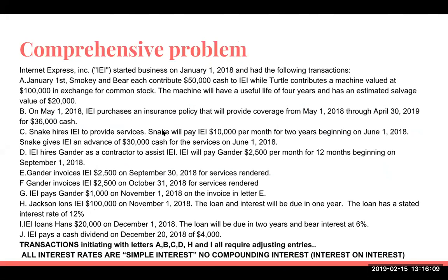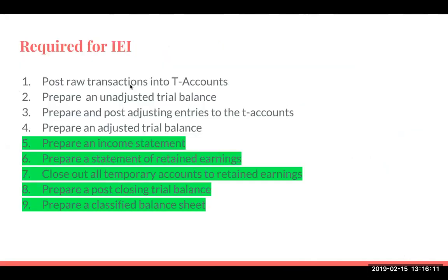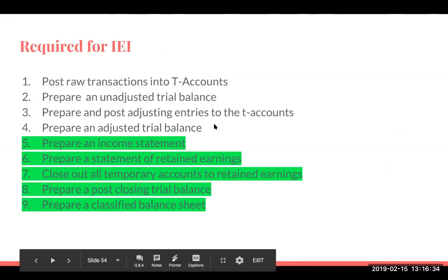We're looking at this comprehensive problem and now we're at the last part. In the earlier video we posted the raw transactions and the T-accounts. We need an unadjusted trial balance. We did the adjusting journal entries, we prepared the adjusted trial balance, and now we're going to do the income statement, statement of retained earnings, closing out temporary accounts to retained earnings, preparing the post-closing trial balance, and lastly a classified balance sheet.